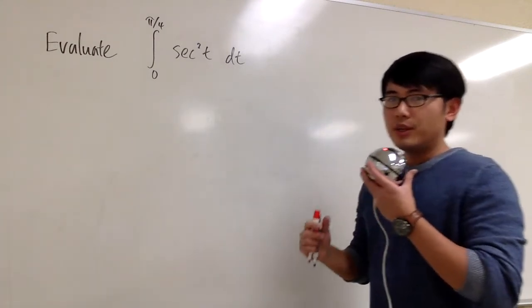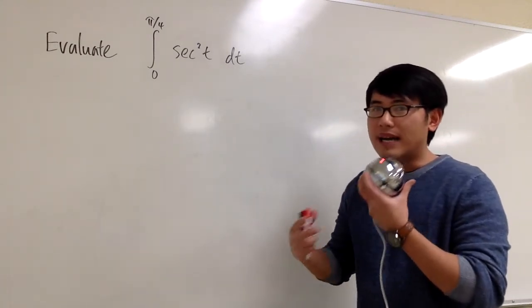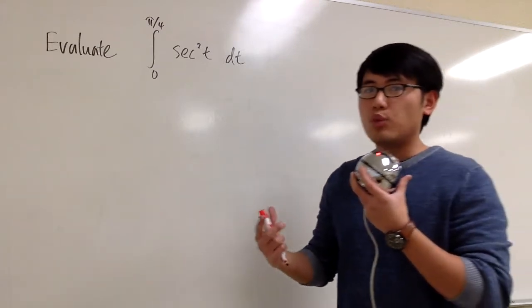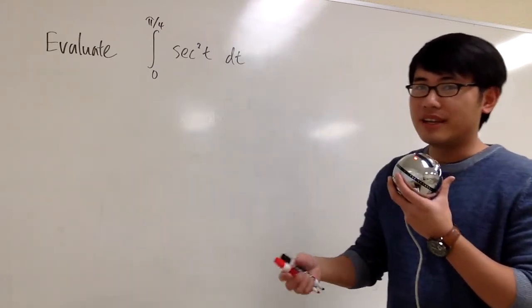In this case, you really have to know your derivative table really well, because you have to ask yourself: the derivative of what will be secant squared? And the answer for that is tangent.